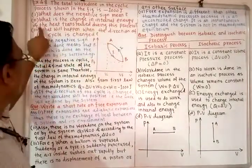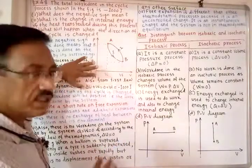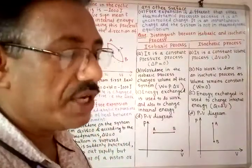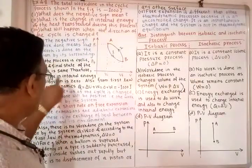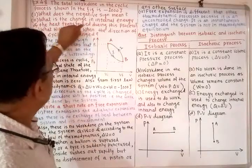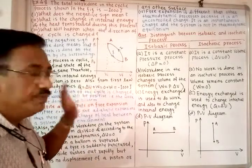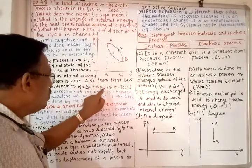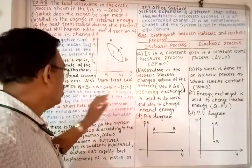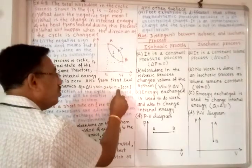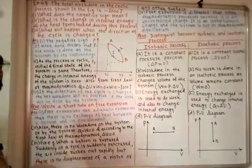As the given process is cyclic, the initial and final states are the same, so there is no change in internal energy — delta U equals zero. From the first law of thermodynamics, Q equals delta U plus W. Since delta U equals zero and W is given as minus 1000 joules, Q equals minus 1000 joules. That is the heat transferred during this process.